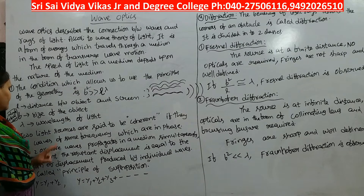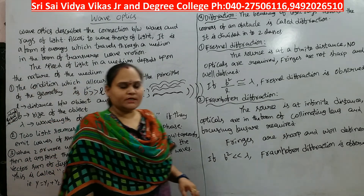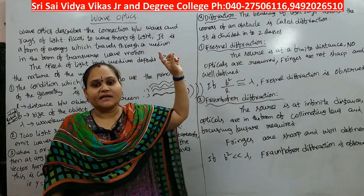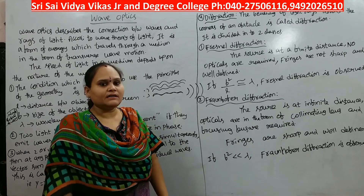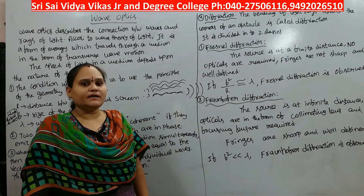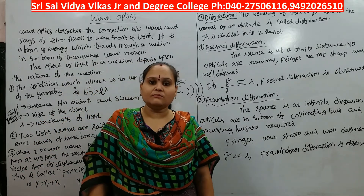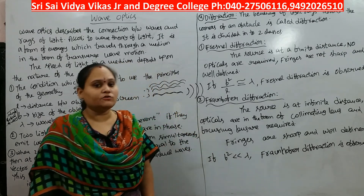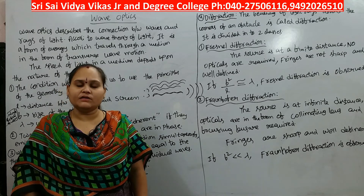Coherent sources: two light sources are coherent if they emit waves of the same frequency which are in phase. When two or more waves propagate in a medium, the resultant displacement equals the sum of individual displacements — that is the principle of superposition. Diffraction is the bending of light around an obstacle. Fresnel diffraction uses no lenses and the condition is b²/l ≈ λ, while Fraunhofer diffraction uses collimating and focusing lenses with the condition b² << lλ, producing sharp and well-defined fringes.